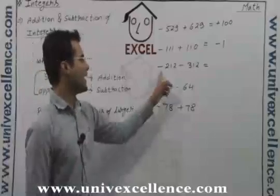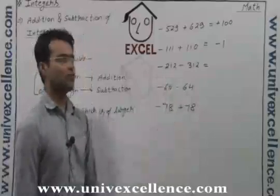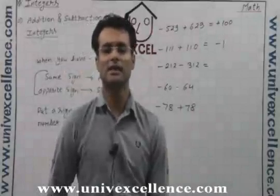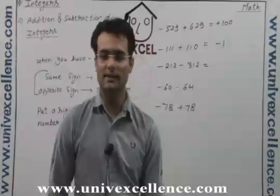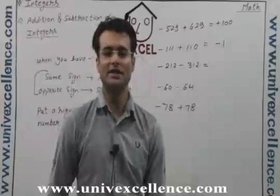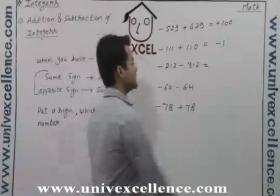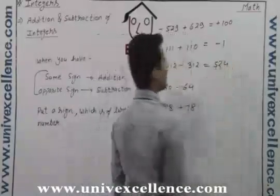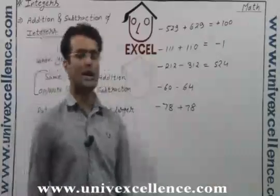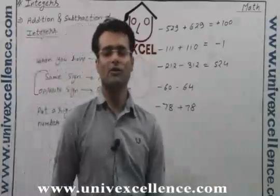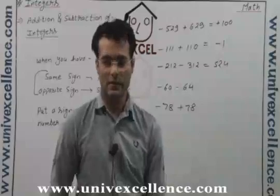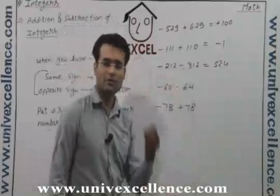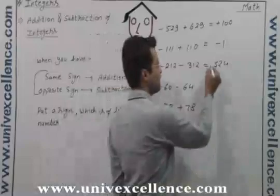The next one is minus 212, minus 312. The signs are the same — if the signs are same, you will do the addition. So if you do the addition, this is 524. But this sign — obviously both are negative, so if we choose the larger one, the sign will be negative.